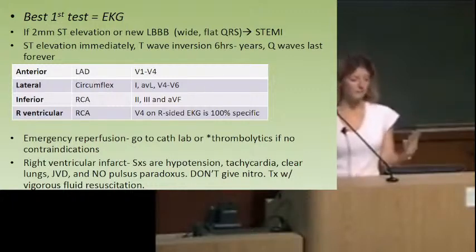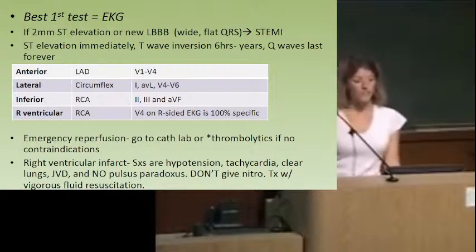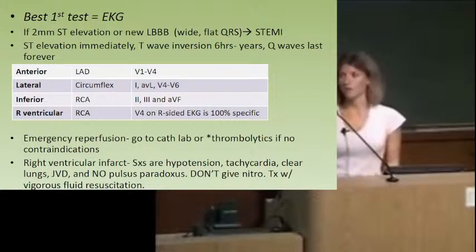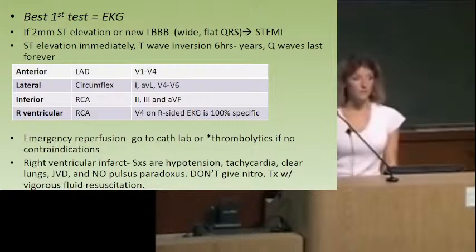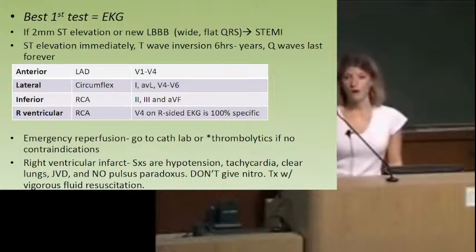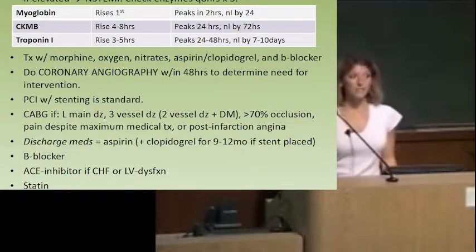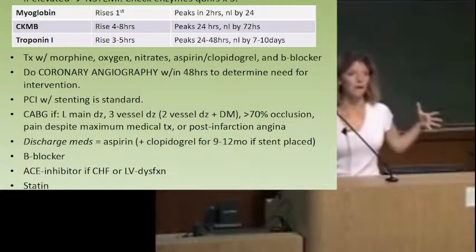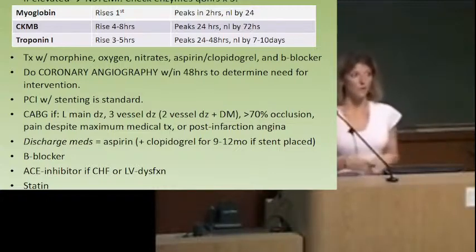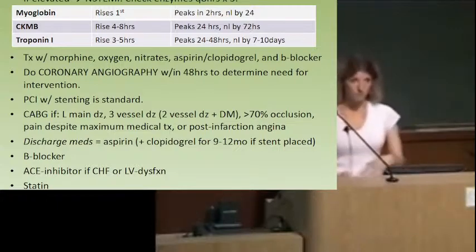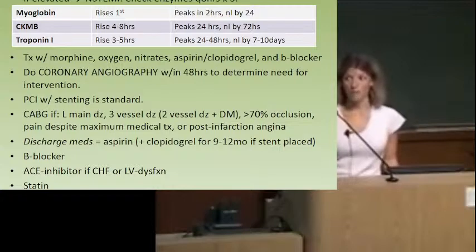In a nutshell: if you see somebody that looks like they're in shock, they've got JVD, but their lungs are clear, think about a right ventricular infarction. The treatment is drastically different. You don't give nitro — if your right ventricle has failed, nitro is a bad idea because these patients are having a problem with preload. Their right ventricle can't pump blood to the lungs. The best treatment is fluids — they need preload added. Nitro is a venodilator, so it will further decrease preload and worsen their shock.